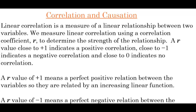An r value close to positive 1 indicates a positive correlation, close to negative 1 indicates a negative correlation, and close to 0 indicates no correlation. So if we're looking at a scatter plot, how close are the data points to forming a perfect line? Positive 1 as a correlation coefficient means a perfect positive relation between the variables, so they are related by an increasing linear function.